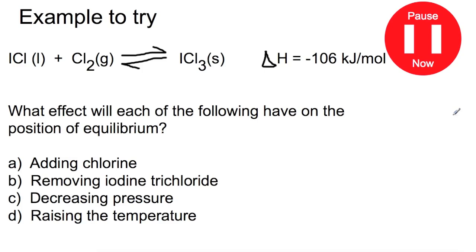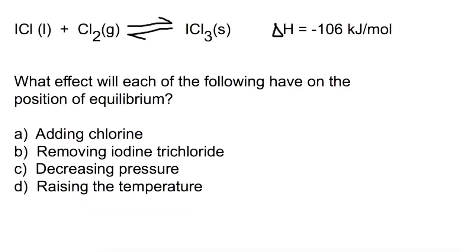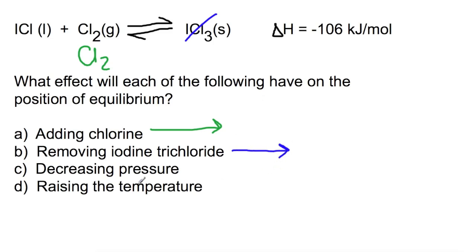Here's an example for you to try. You've been given an equation and some information about the enthalpy change for the reaction. You need to consider each of the different conditions that have been changed and what effect it would have on the position of equilibrium. Looking at the first condition, we're going to be adding in more chlorine. This means that we're adding in more reactant, and that means we'll push our equilibrium to the right as we try to get rid of that reactant and turn it into product. The second condition change is to remove some of your iodine trichloride. By removing iodine trichloride, you disrupt the equilibrium, and the equilibrium tries to replace what you've removed, which will again push your equilibrium to the right.